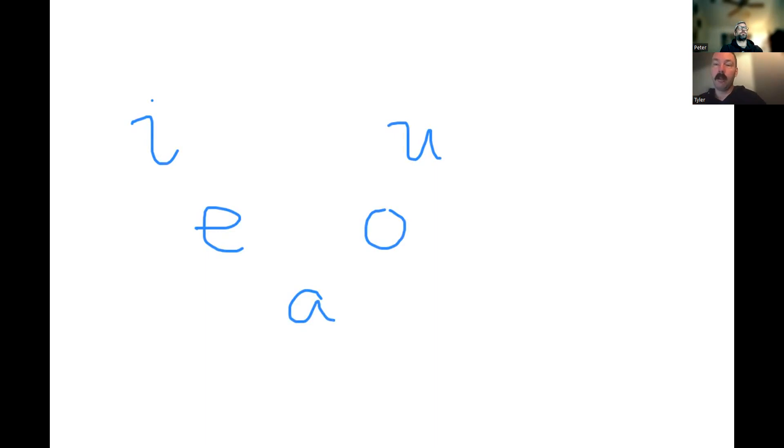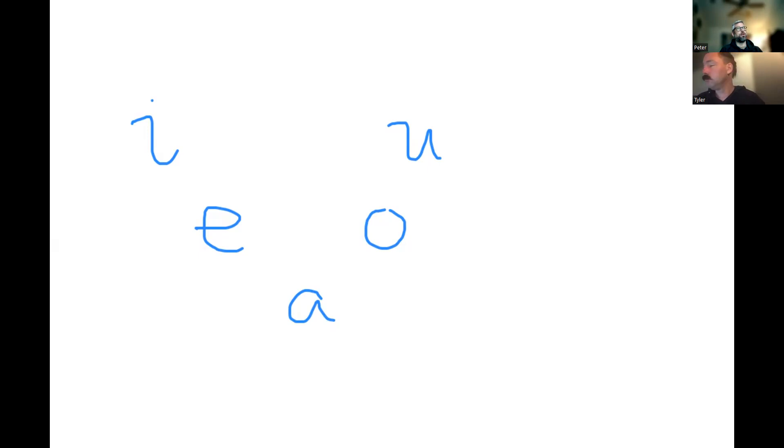Is it likely there are any other vowel phonemes besides these five? I think it's unlikely. While Tyler and I haven't heard a speaker of the language, I have heard speakers of closely related languages, so I have an idea about what the phonemes might sound like. They may also have diphthongs — a diphthong is kind of like two vowels that count as one, in the space of one syllable.